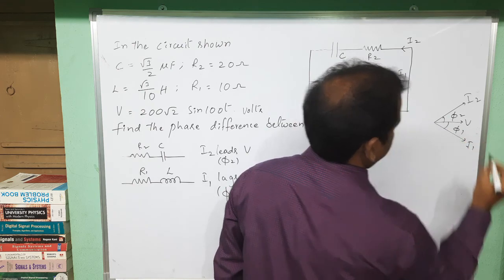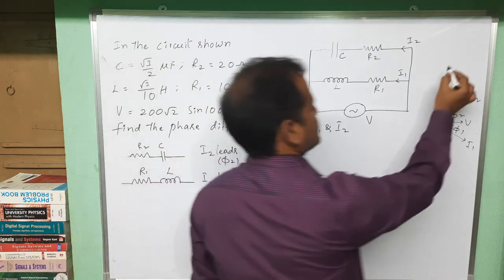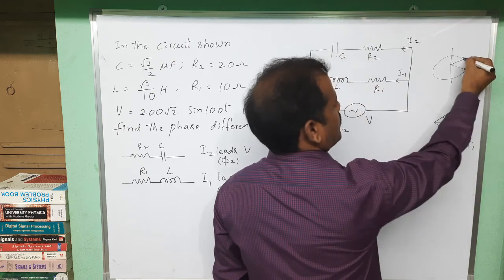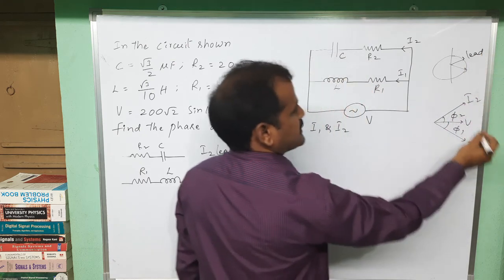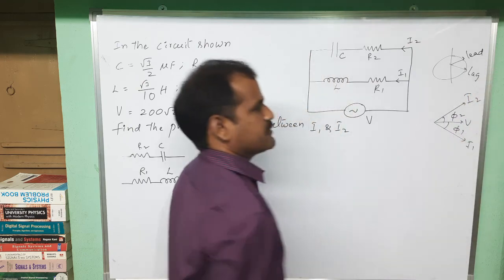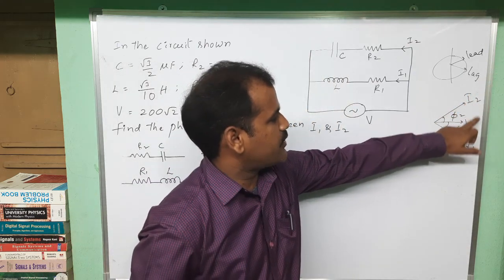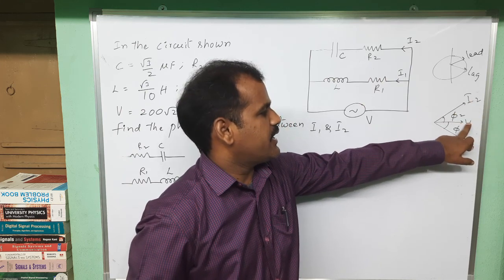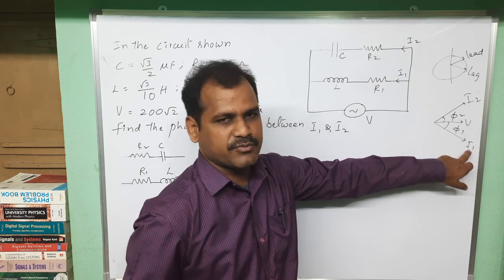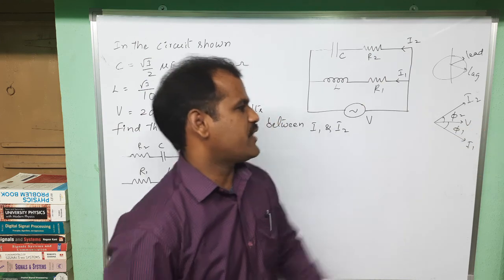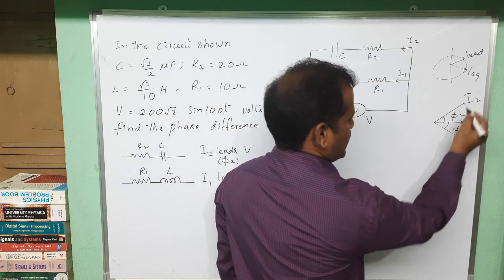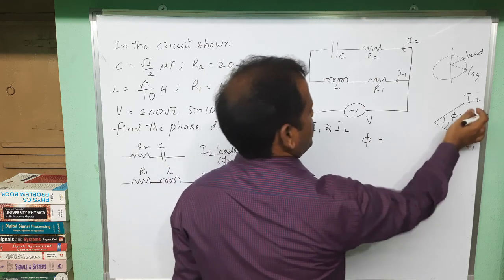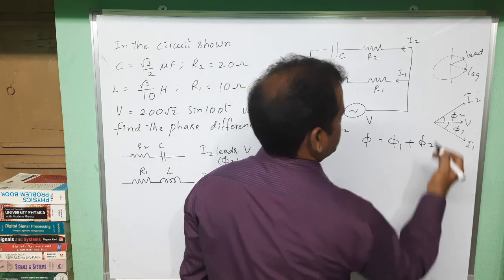To identify leading and lagging: simply think of a clock — the upper quantity leads the lower quantity. In the RC circuit, i leads V, so i is placed above V. In the RL circuit, i lags V, so i1 is placed below V. Therefore, the total phase difference between i1 and i2 is phi1 plus phi2, and that is the quantity we need to find.